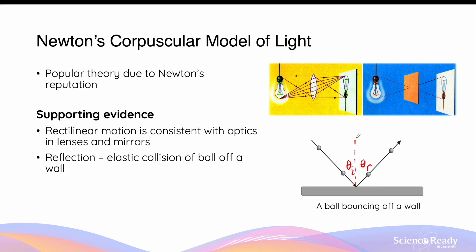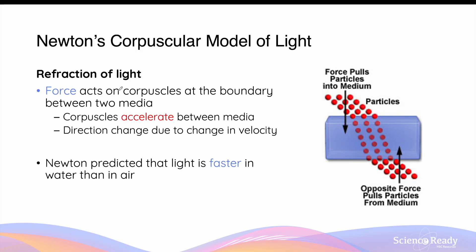Newton further analysed that when a light corpuscle is reflected off the wall, its horizontal component of velocity that is parallel to the surface remains unchanged, while the direction of the vertical velocity is reversed. Newton also attempted to explain the phenomenon of refraction.